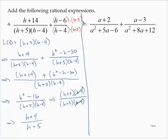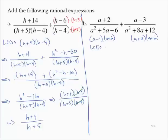Next problem: (a + 2) / (a² + 5a − 6) plus (a − 3) / (a² + 8a + 12). Let's find the LCD. We need to factor the denominators: a² + 5a − 6 factors as (a − 1)(a + 6), and a² + 8a + 12 factors as (a + 2)(a + 6). So the LCD would be (a − 1)(a + 6)(a + 2).